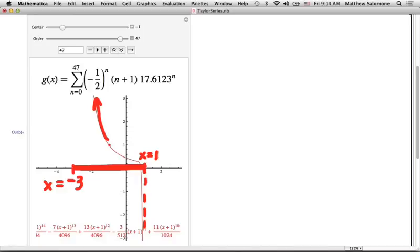One consistency check on that is that whatever you get, your center point ought to be smack in the middle of that interval. And what was the center point of this power series? x equals negative 1.